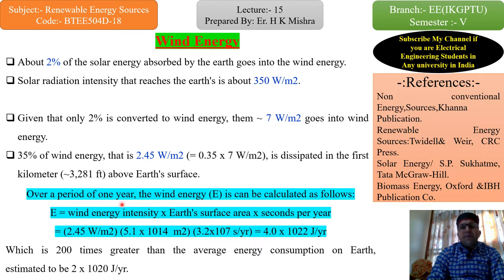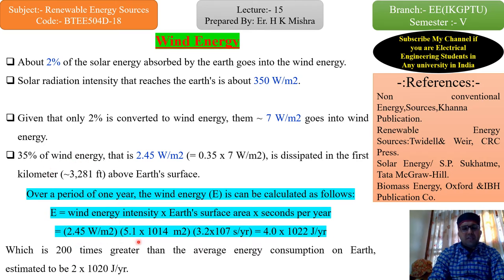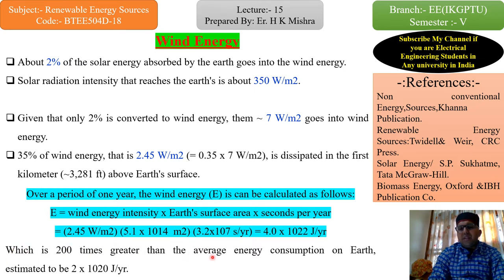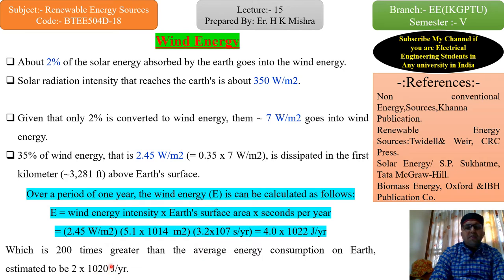So if we do an overall calculation over a period of one year, wind energy E can be calculated as: E = wind energy intensity × Earth's surface area × seconds per year. Taking 35%, that is 2.45 W/m² × 5.1×10¹⁴ m² × 3.2×10⁷ seconds per year, which gives us 4×10²² joules per year. This is 200 times greater than the average energy consumption on Earth, estimated at 2×10²⁰ joules per year.